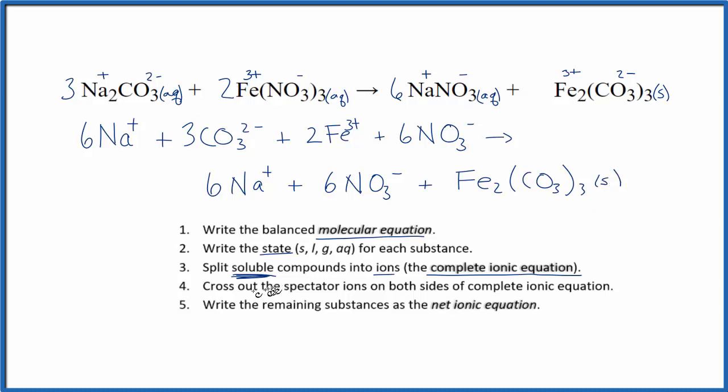Once we've done this, now we can cross out the spectator ions. These are ions that are on both sides of the equation. They really don't change. We start out with six sodium ions, we end up with six sodium ions. Let's just get rid of them. And then we have six nitrate ions, six nitrate ions. We can cross those out.